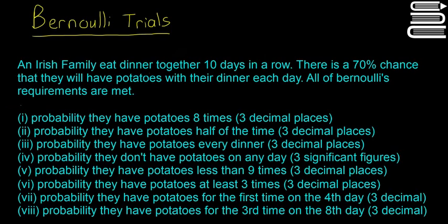So I'll just read the start of it now. An Irish family eat dinner together 10 days in a row. There is a 70% chance that they will have potatoes with their dinner each day. All of Bernoulli's requirements are met. So the last sentence there just means that each trial is independent, there's a finite number of trials, and there's only two outcomes - success or failure. So I'm not going to go through each one individually. We'll just start at the first one.